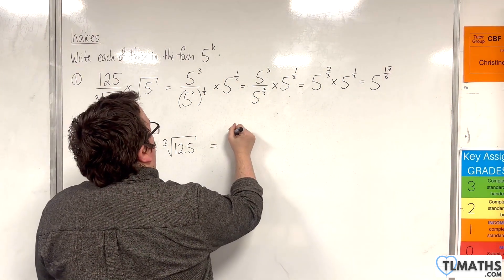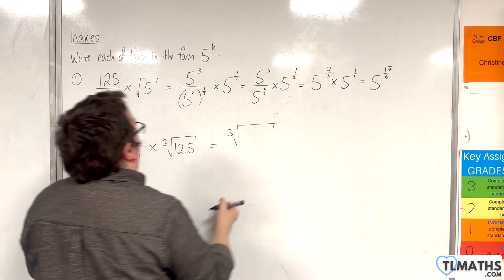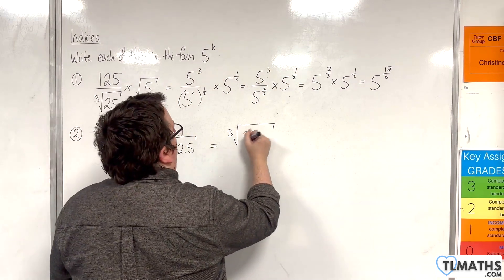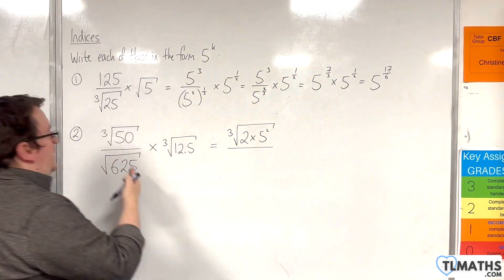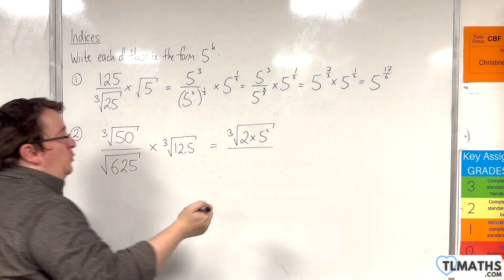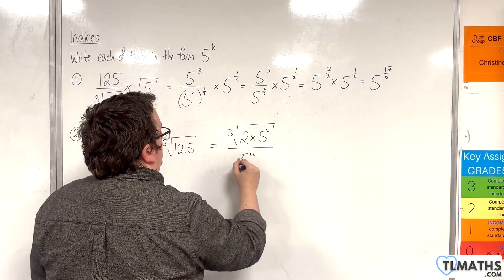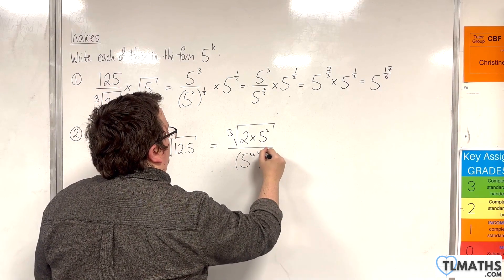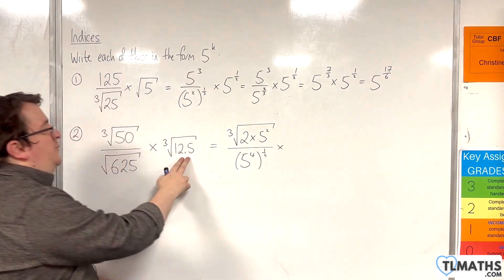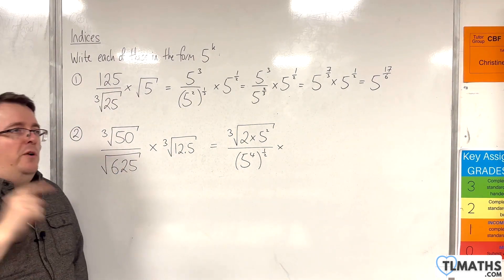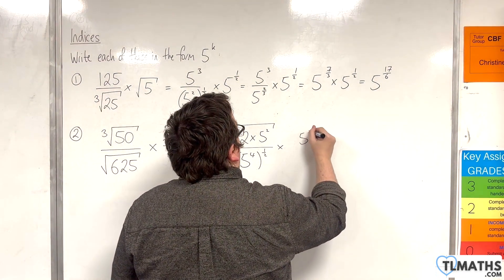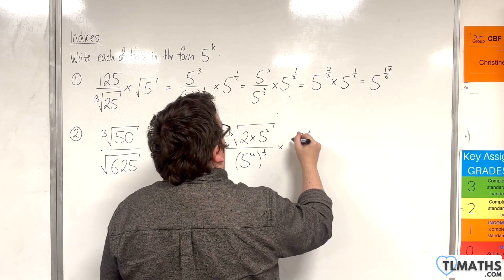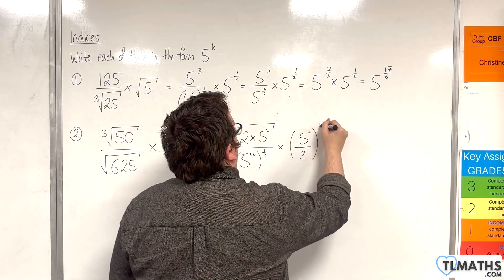So I could write this as the cube root of 2 times 5 squared. And of course the 625 is 5 to the power of 4, so 5 to the power of 4 to the power of a half. And then the 12.5, well 12.5 is 25 over 2, so that's 5 squared over 2. And it's cube rooted, so to the power of a third.